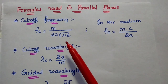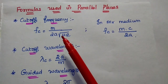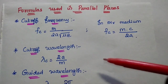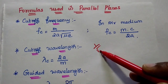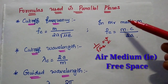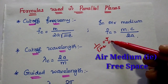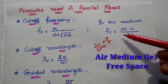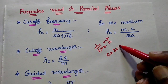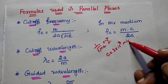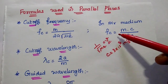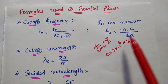The cutoff frequency fc is equal to m by 2a times square root of mu epsilon. Here, 1 by square root of mu epsilon is the velocity of propagation. In the case of air medium, this velocity is the velocity of light c, with a value of 3 into 10 to the power 8 meter per second. So in the case of air medium, the cutoff frequency is equal to mc by 2a.